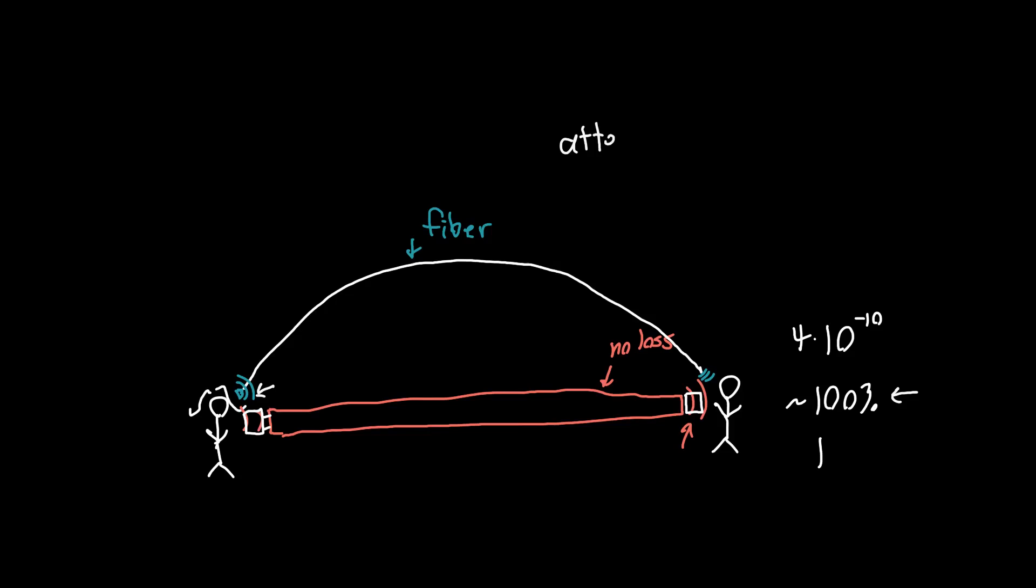The attenuation for fibers is typically on the order of a decibel per kilometer, so you might get like 20% of your light lost over a single kilometer, instead of this ungodly absurd amount of loss. So you end up with 0.8 of your total power versus 4 times 10 to the minus 10. And so waveguides are amazing. They solve this really difficult problem really, really well. And we love using them.